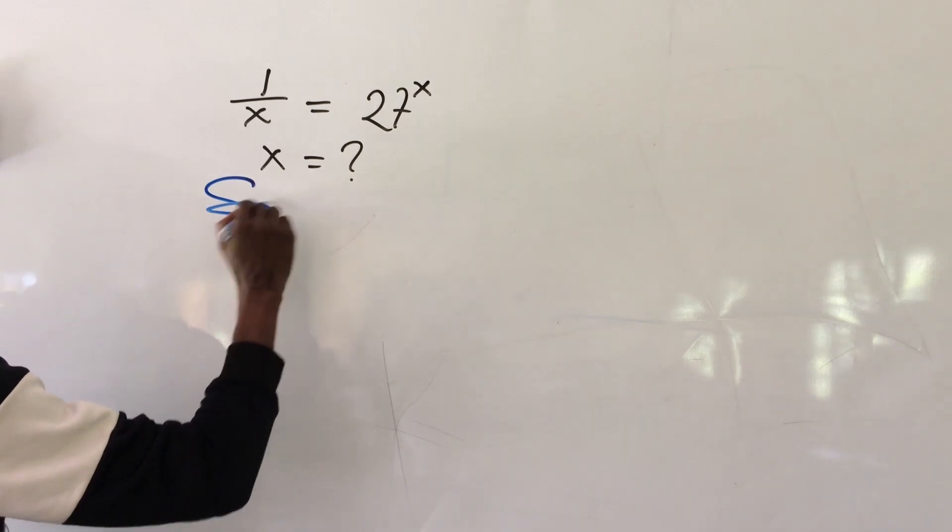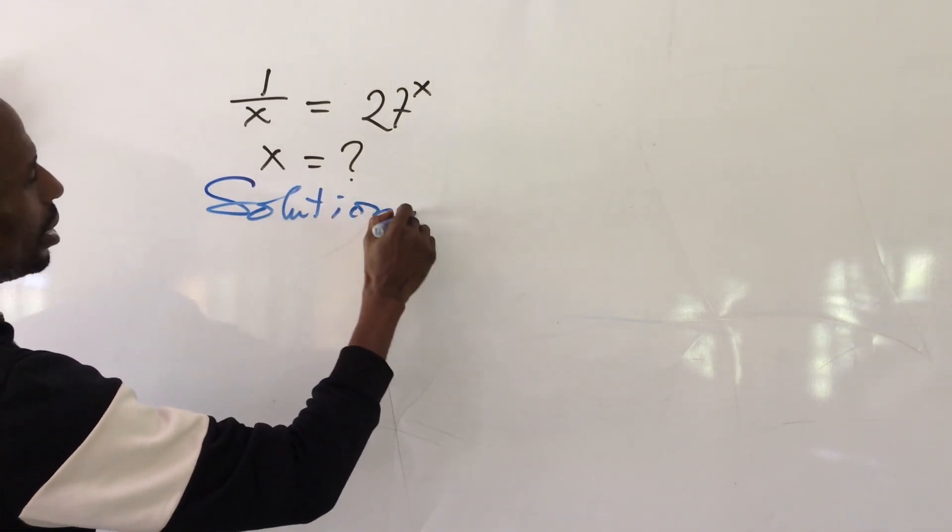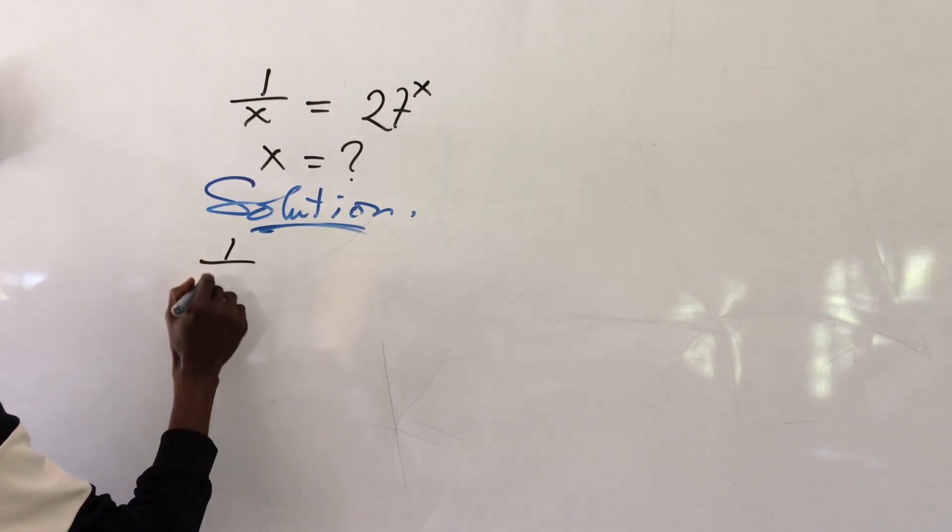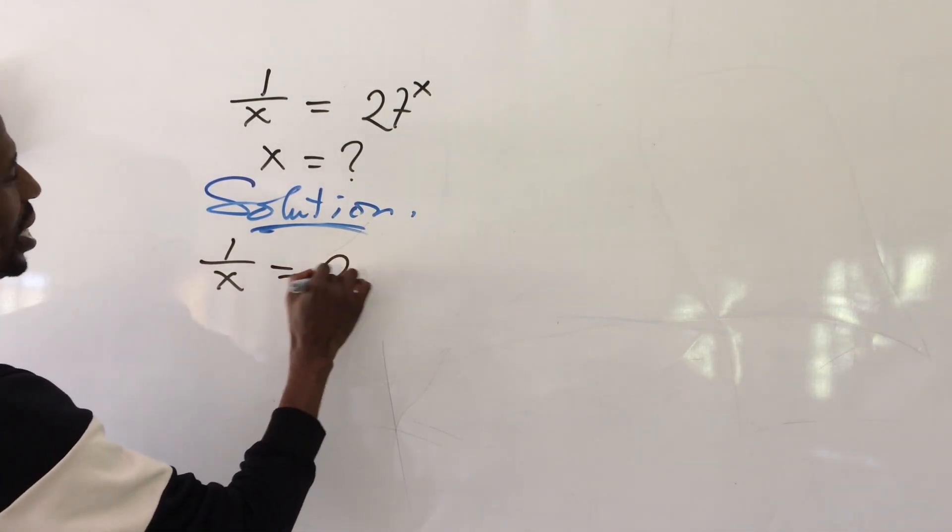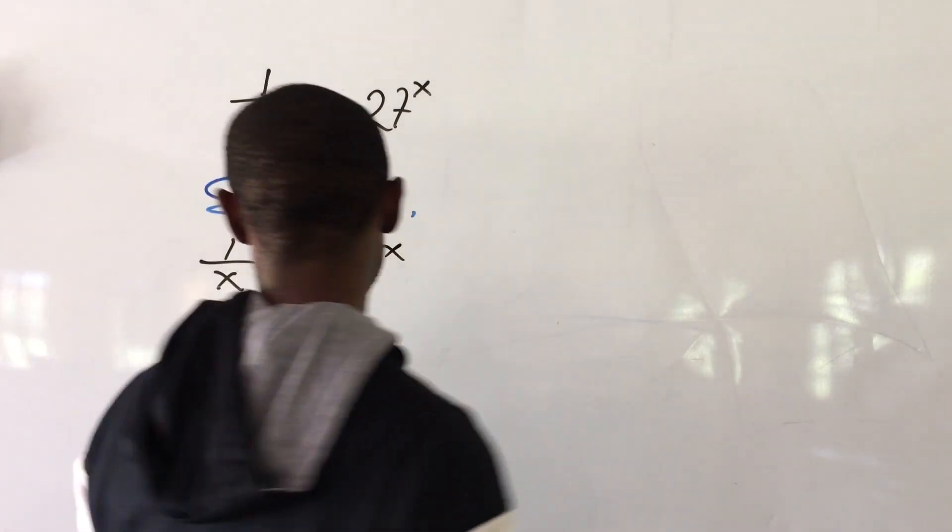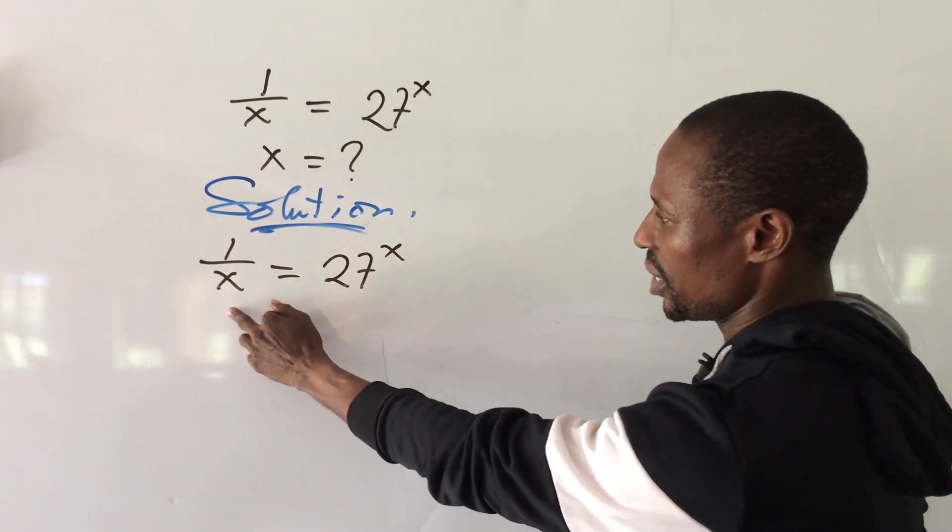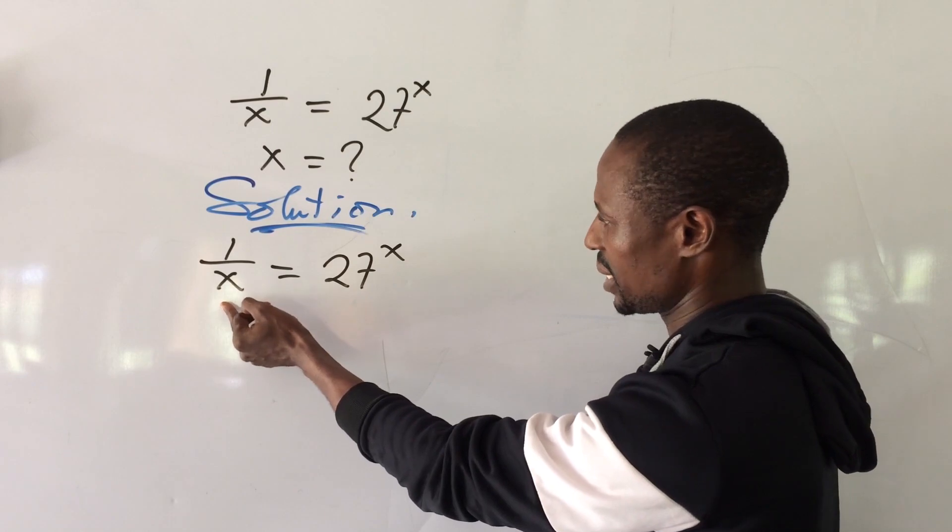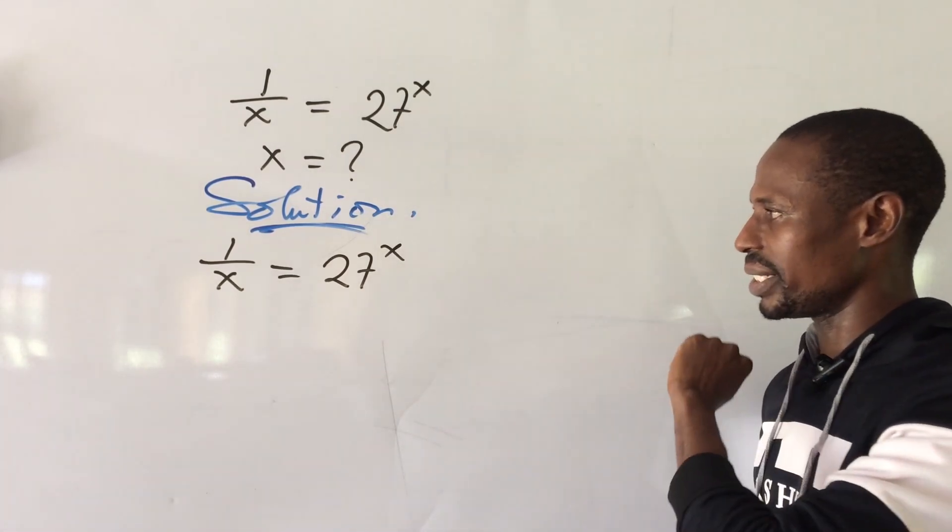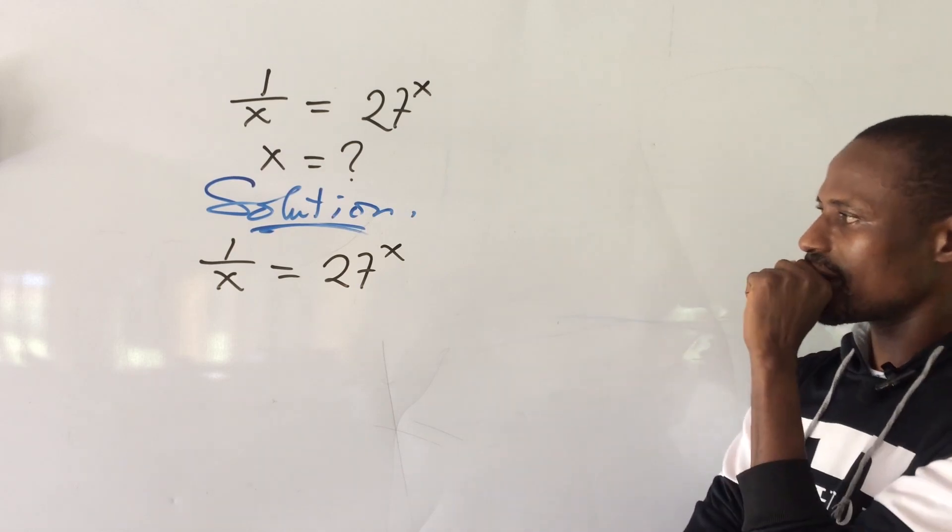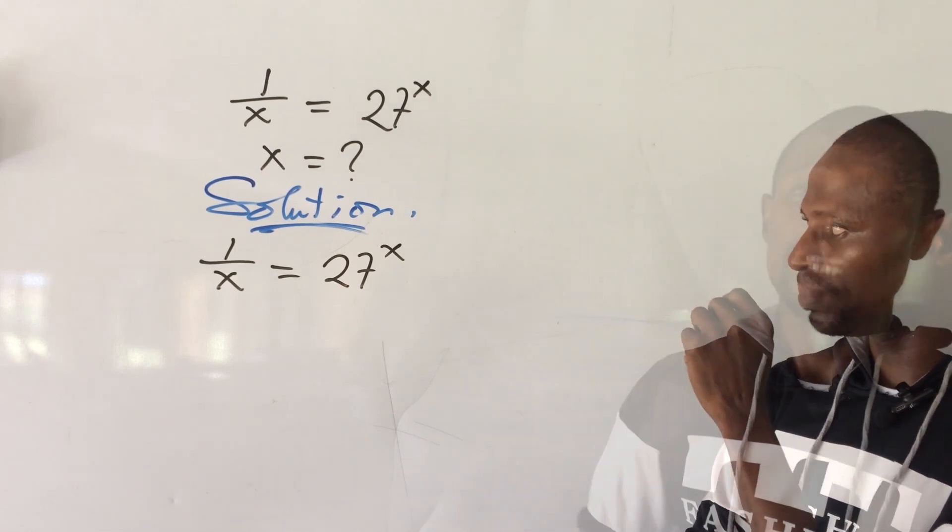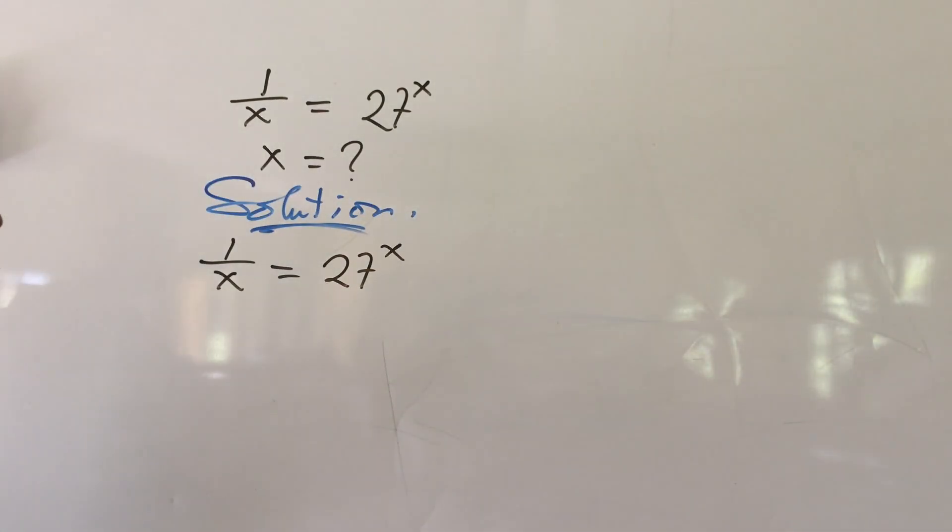Without much waste of time let's take down our question. We have 1 all over x equal to 27 to the power of x. Now we're having a variable here at the base and at the same time we're having a variable at the exponent. How do we do this?